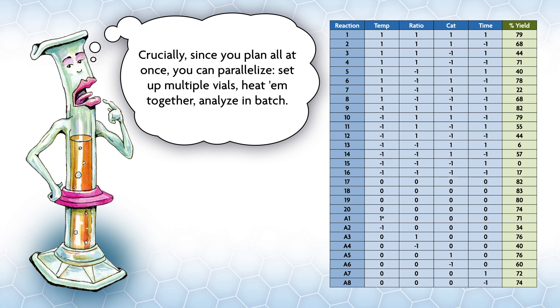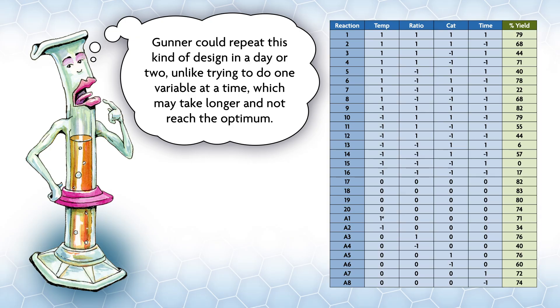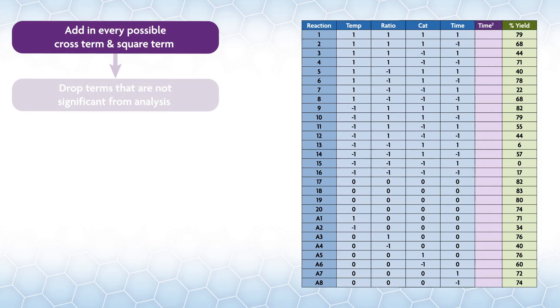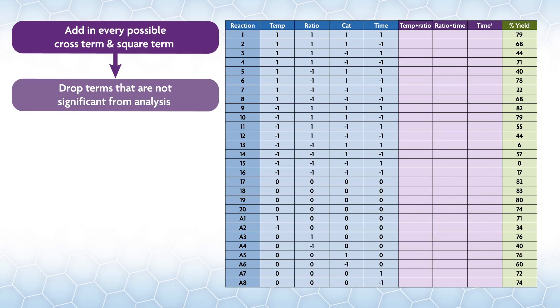Crucially, since you plan all at once, you can parallelize. Set up multiple vials, heat them together, analyze, and batch. Gunner could repeat this kind of design in a day or two, unlike trying to do one variable at a time which may take longer and not reach the optimum. To start, we add in every possible cross term and square term, then do a regression. Many of the terms are not significant and are dropped from the analysis. In this case, you end up with a relatively complex model that has all the primary terms, two cross terms, temperature and ratio and ratio time, along with one squared term, temperature squared.